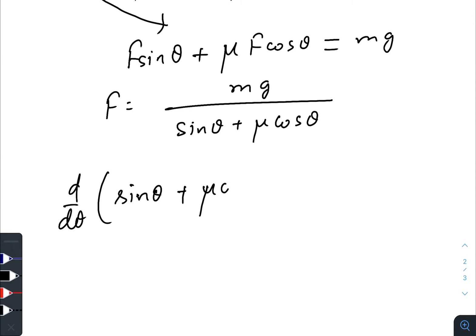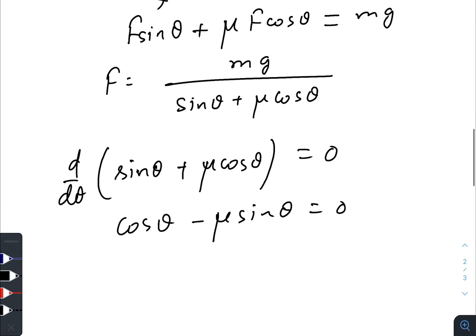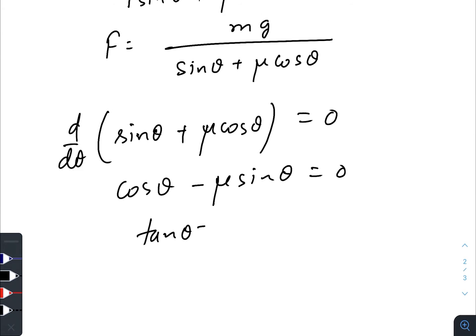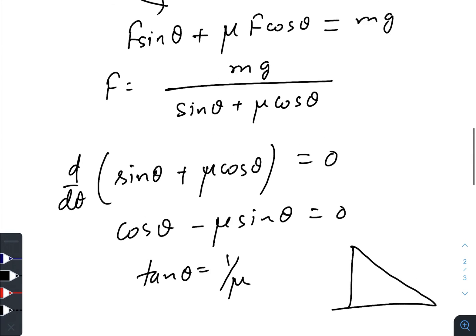So we have cos θ minus μ sin θ equals to zero. So we have tan θ equals 1 divided by μ. For minimum value, we need to just plug this value of θ in this equation.